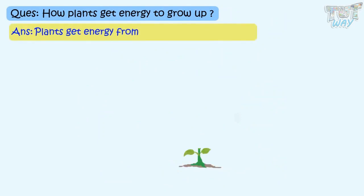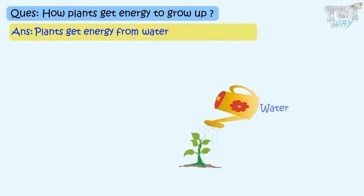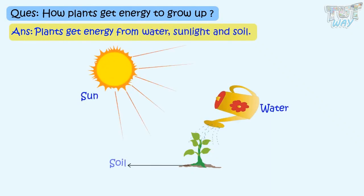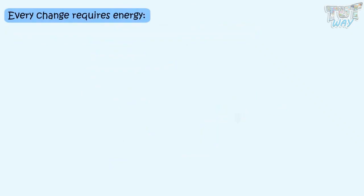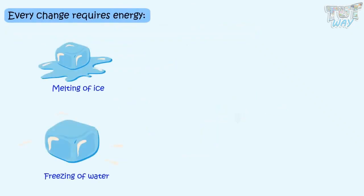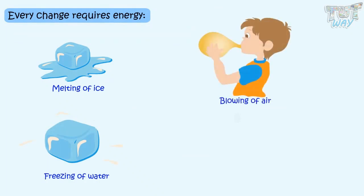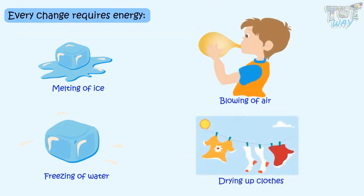Plants get energy from water, sunlight, and soil. Every change — like melting of ice, freezing of water, blowing of air, drying up clothes — every activity requires energy.